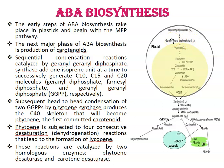These are geranyl diphosphate (C10 compound), farnesyl diphosphate (C15 compound), and geranylgeranyl diphosphate GGPP (C20 compound). Then subsequent head-to-head condensation of two GGPPs by phytoene synthase enzyme produces the C40 skeleton that will become phytoene, the first committed carotenoid. Phytoene is subjected to four consecutive desaturation reactions that lead to the formation of lycopene.